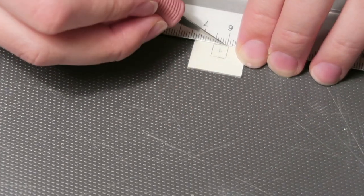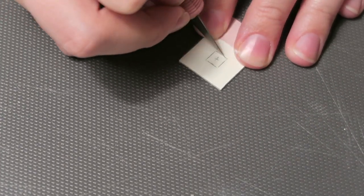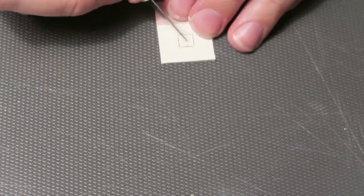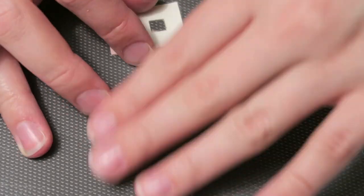I marked where the windows would go and cut them out. The dollhouse I based this off thankfully only has three windows, so I didn't have to relive my experience with the 32 window Amsterdam facade.